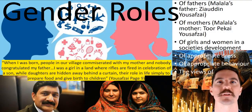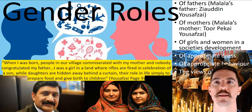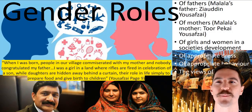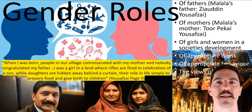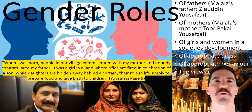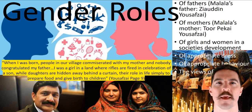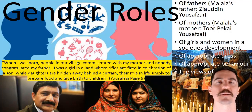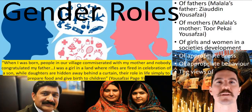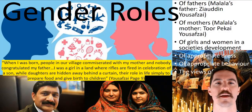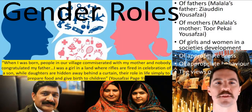Gender roles is a key theme. We're talking about Malala's father Ziauddin Yousafzai and her mother, whose name is Tor Pekai, though she's just referred to as mum in the text. Dad gets a lot more expansive description in the book, and you could comment on why that is the case. We're talking about the role of women and girls in society, appropriate dress, appropriate behavior. A starter quote on page 9: 'When I was born, people in our village commiserated with my mother... I was a girl in the land where rifles are fired in celebration of a son while daughters are hidden away behind a curtain. Their role in life simply to prepare food and give birth to children.'